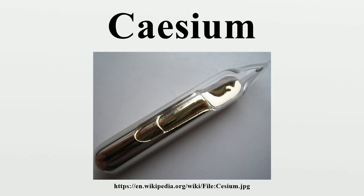In addition, the metal has a rather low boiling point of 641 degrees Celsius, the lowest of all metals other than mercury. Its compounds burn with a blue or violet color. Cesium forms alloys with the other alkali metals, as well as with gold, and amalgams with mercury.